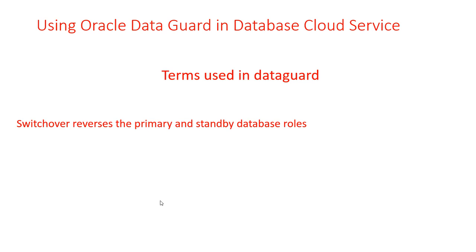A switchover reverses the primary and standby database roles, and each database continues to participate in the Data Guard association in its new role. A switchover ensures no data loss and can be used before planned maintenance. If you want to do maintenance on your primary, you take a short outage of around 30 minutes to switch roles, making the primary into a standby. When it restarts, log apply resumes and brings the database back in sync, though there may be a lag while waiting logs are applied.